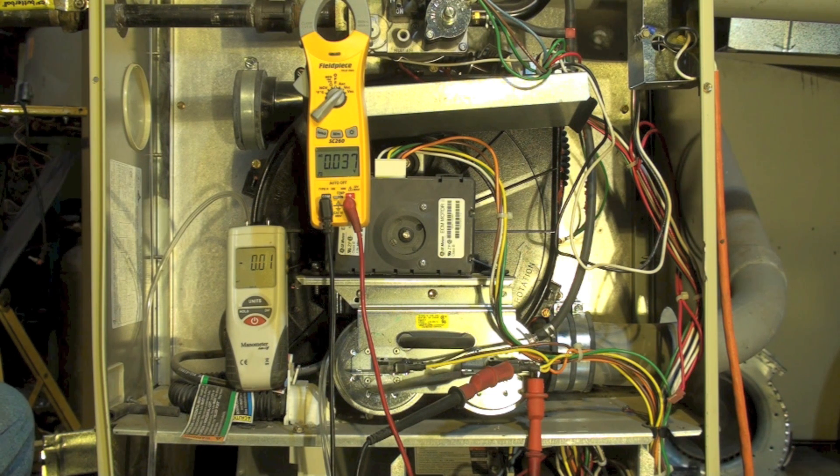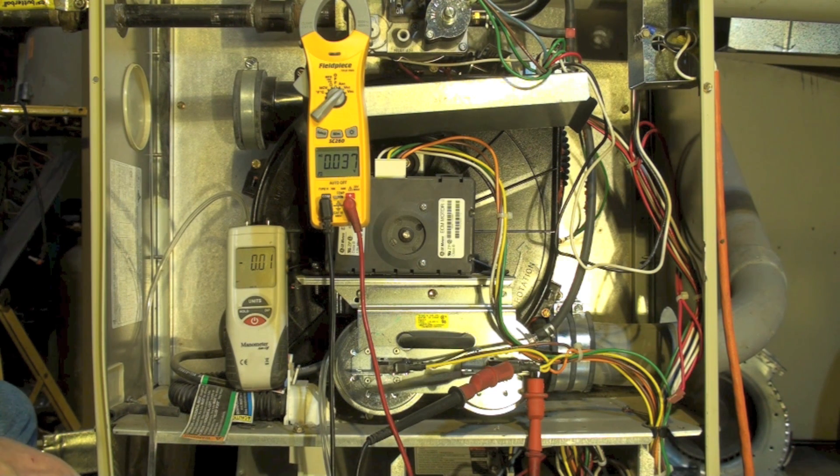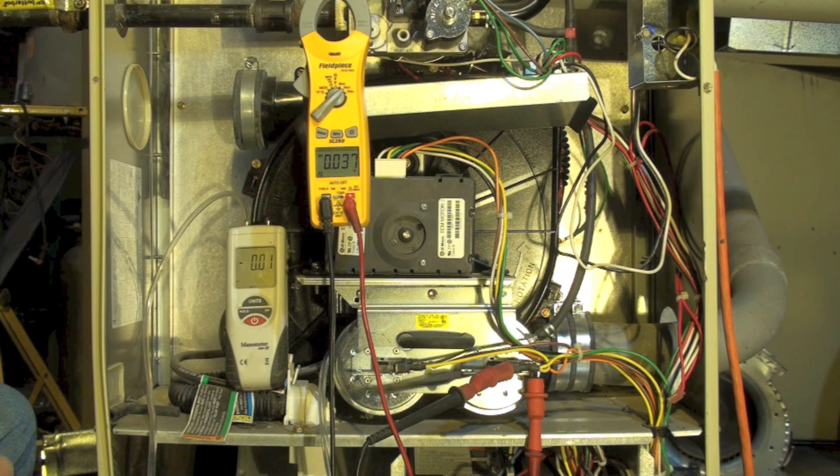This meter here is going to give me the vacuum that is inside the furnace. Now what this inducer is going to do, because it's a variable speed inducer, is it is going to match the negative pressure in the vent to the venting. If it's not a variable speed, it just goes up to a certain amount and if the venting is clear it makes. What this does is adjust the inducer speed or the vacuum. The inducer speed creates a vacuum. It adjusts that speed to the venting.